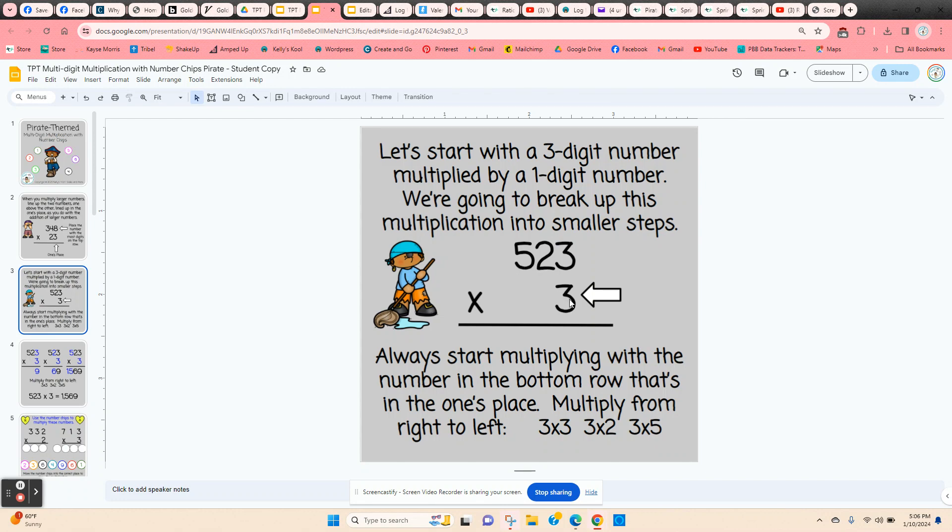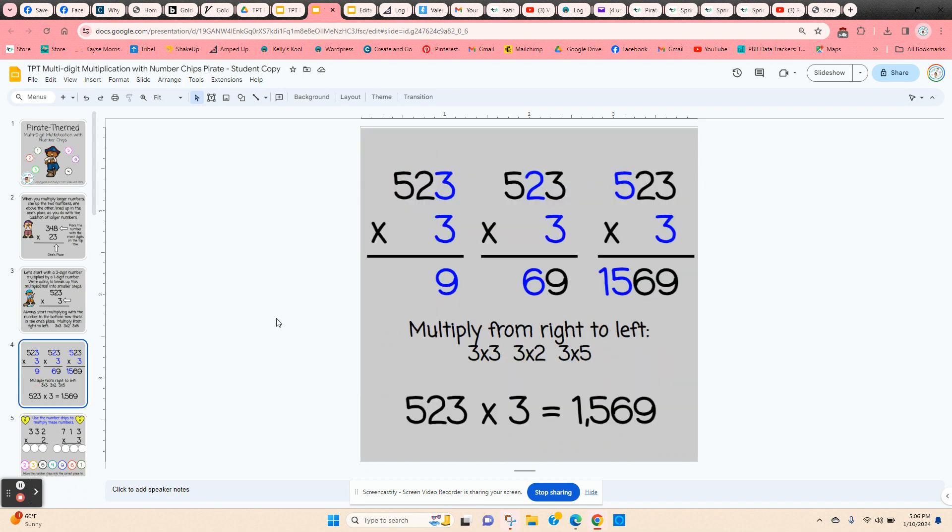It shows how to do that on the next slide. You want to explain to the students that 3 times 3 is 9, so the 9 is going to go right here. When they multiply 3 times 2, they're actually multiplying 3 times 20, and that's why that 6 would be in the tens place.